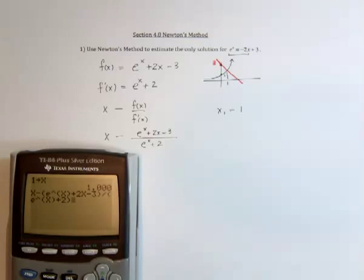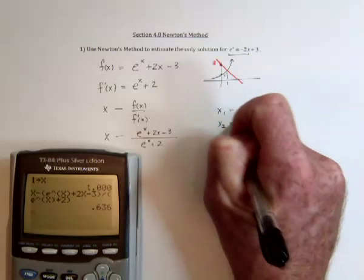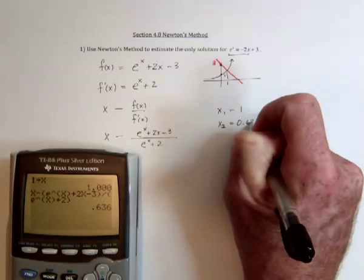So now the calculator is going to take the x, substitute it in, and you get that x number 2 is 0.636.